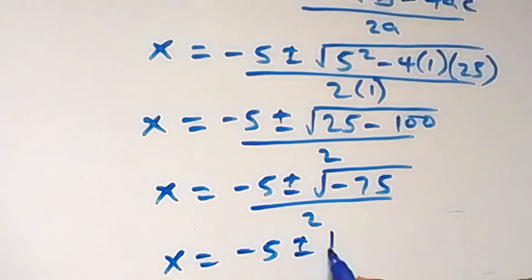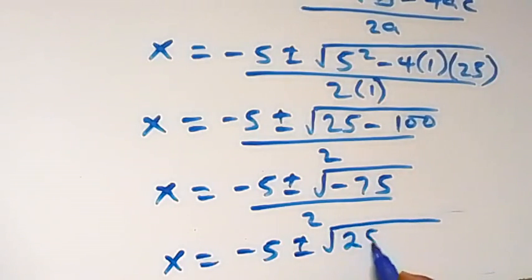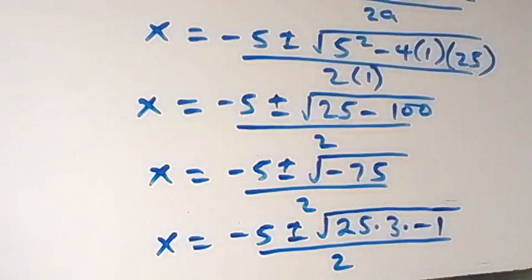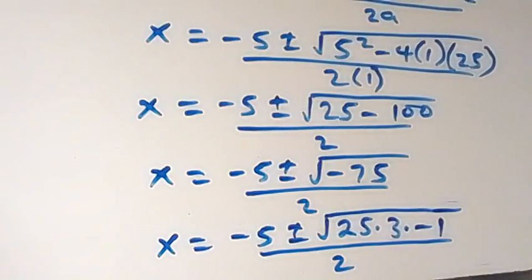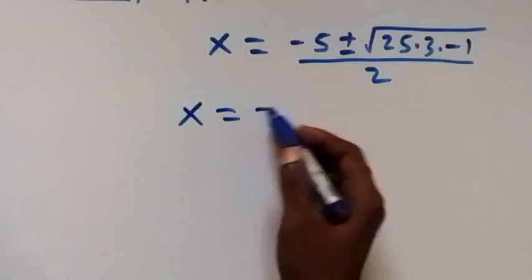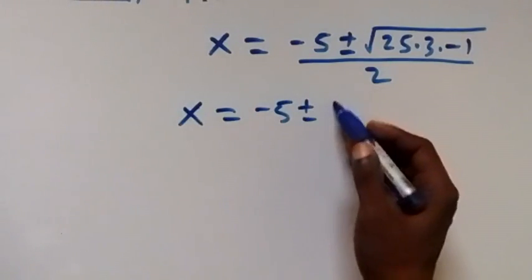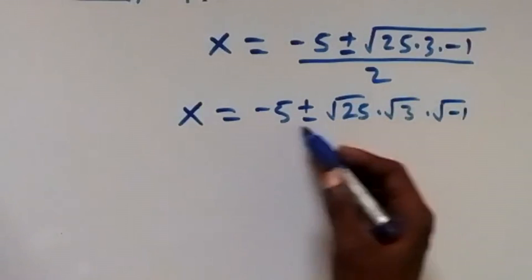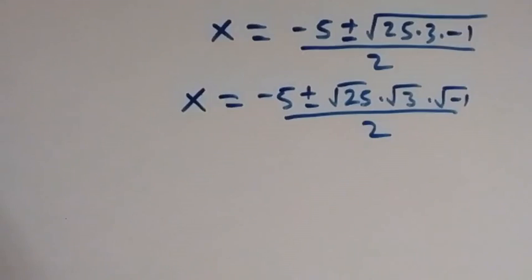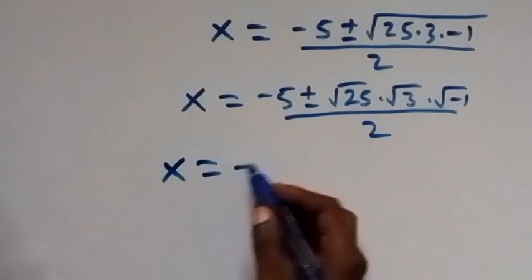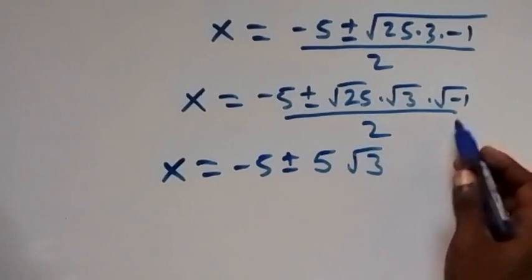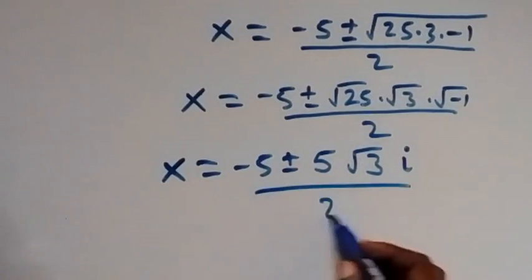From here we have x equals minus 5 plus or minus square root of 25 times 3 times minus 1, over 2. We can separate this: x equals minus 5 plus or minus root 25 times root 3 times root minus 1, over 2. Root 25 is 5, and root minus 1 is i, so x equals minus 5 plus or minus 5 root 3i over 2.